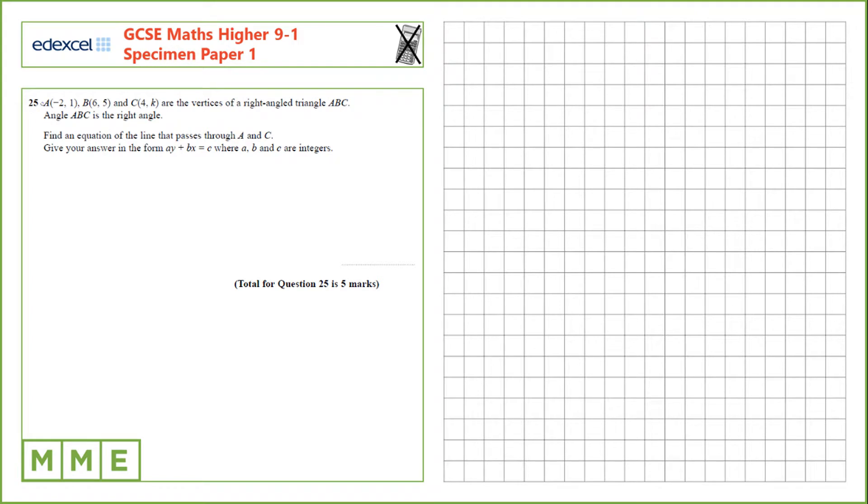Question 25. We have three points A, B and C, and C includes the coordinates for K. These are the vertices of a right angle triangle ABC, and angle ABC is the right angle. We need to find an equation of the line that passes through A and C, and give that in the form AY plus BX.